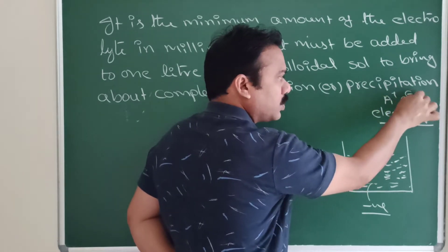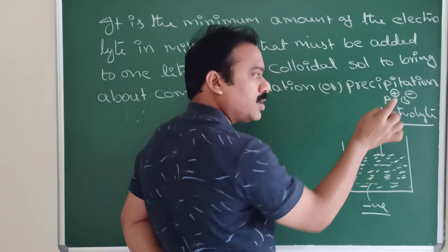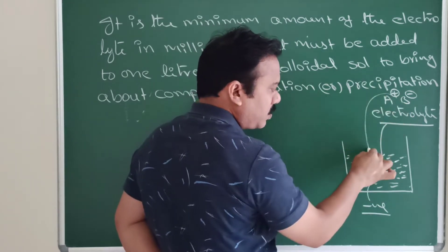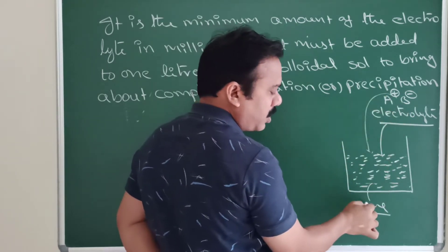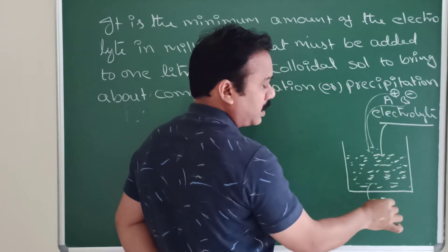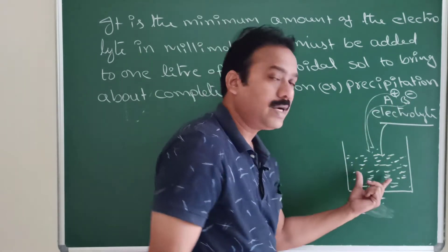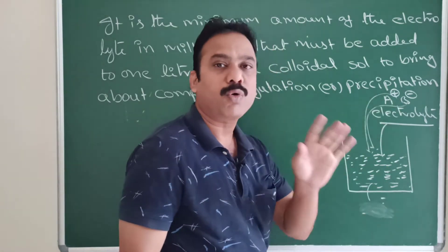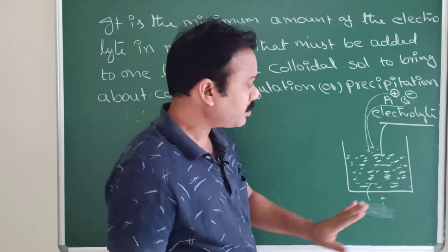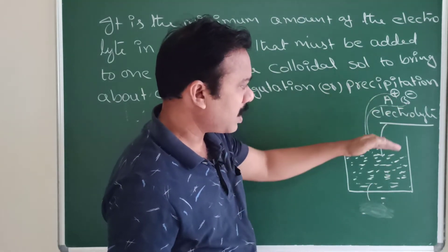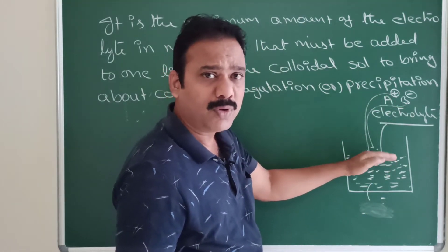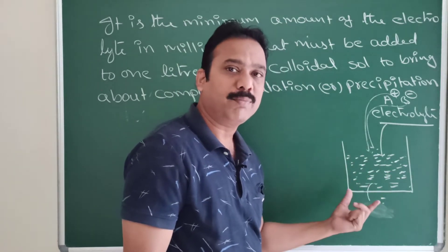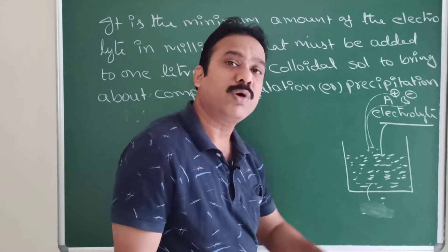An electrolyte has both positive and negative ions. For a negative colloidal sol, the positive ions cause coagulation. For a positive colloidal sol, the charge is opposite, so the negative ions cause coagulation. When we add an electrolyte to a lyophobic sol, precipitation or coagulation occurs. That process is the basis of flocculation.